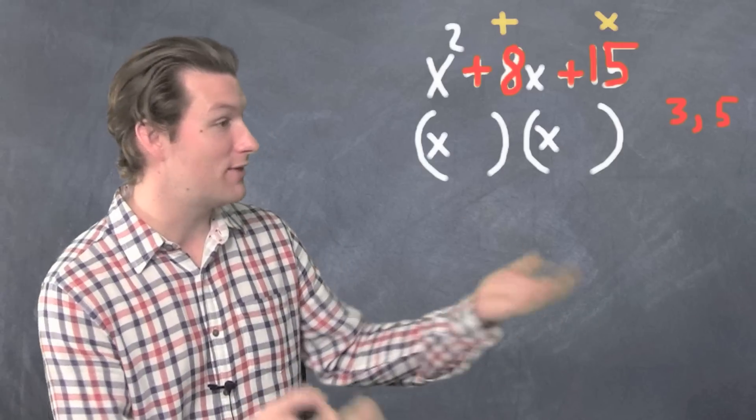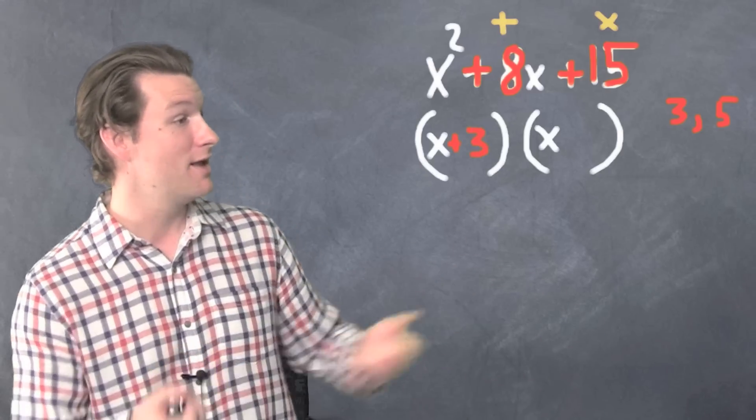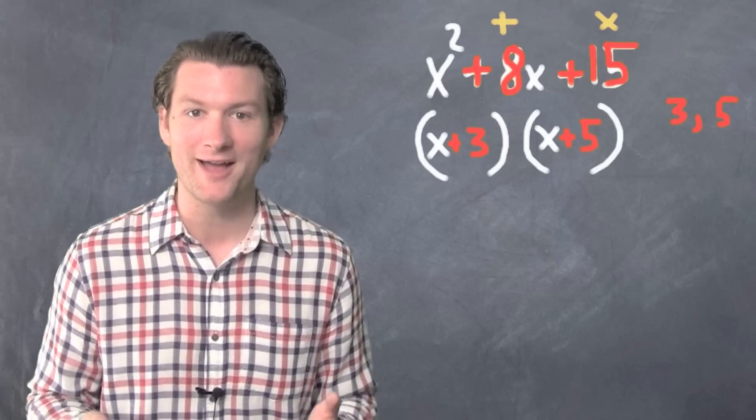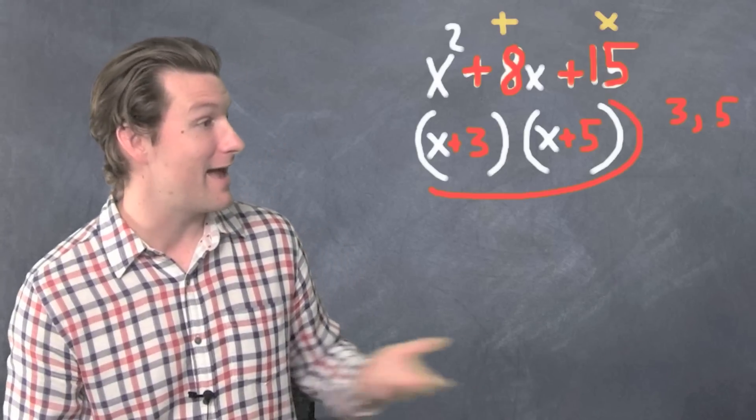Those are the two that fill into the parentheses. Put them in any order—we can put the 3 there and the 5 there. We're done. We factored the polynomial, or the trinomial, by unfoiling. Our final answer is x plus 3 and x plus 5.